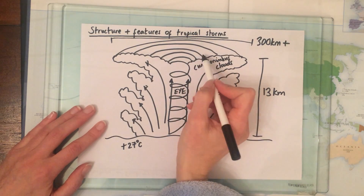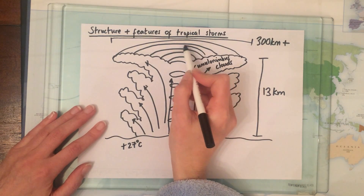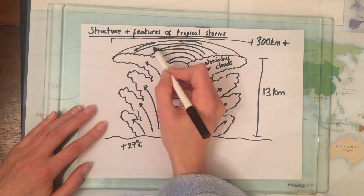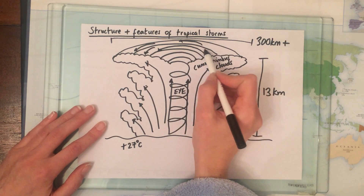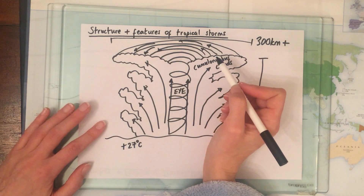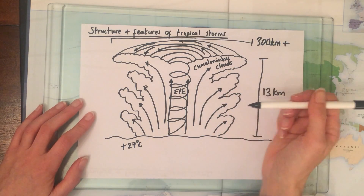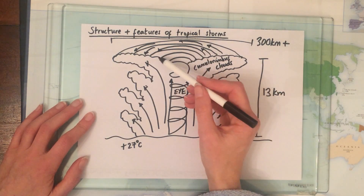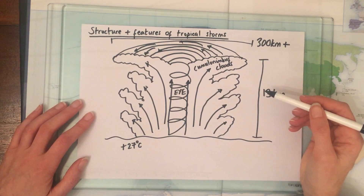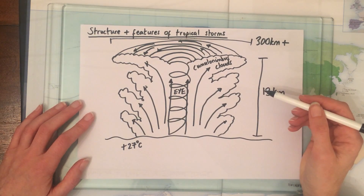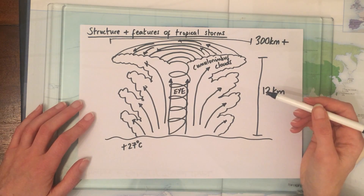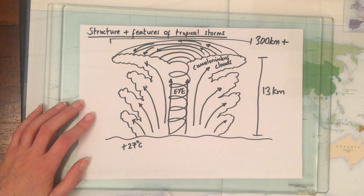We also have our spiralling winds going in an anti-clockwise direction if we are drawing a storm for the northern hemisphere. If we were drawing this in the southern hemisphere, it would rotate in a clockwise direction. But in the northern hemisphere, where we live, it rotates anti-clockwise.